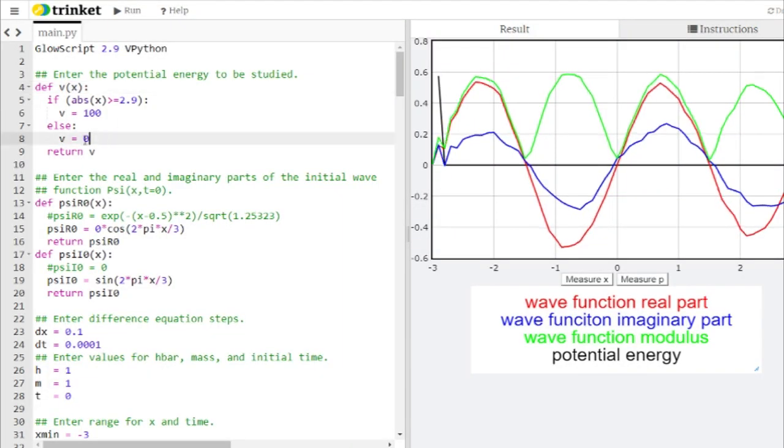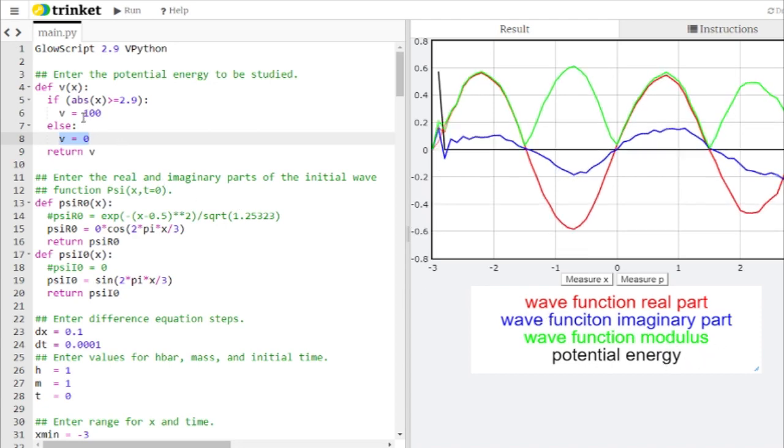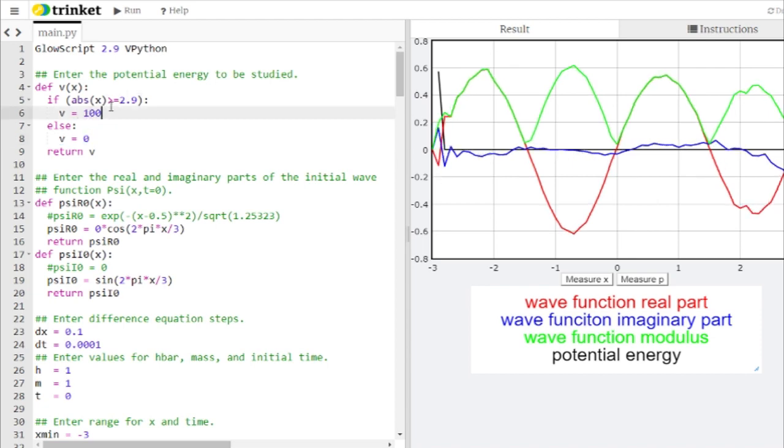All right, so I claimed earlier that if the potential energy that you're working with is zero, that sine and cosine should give you a stationary modulus, a constant wave function modulus. We have to do a little bit of adjustment to that claim to get it to work in the computer, because we can't just have the wave function going off forever. We do have to put an end stop to it. So here what I've put in is what's called the infinite square well, where you put up a very, very high wall on either side. So for the very left and right edges, we're just going to put up a very high potential energy. 100 is not infinity, but it's good enough for computational work.